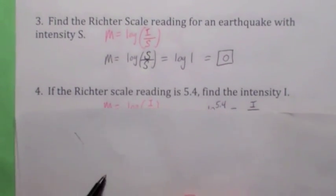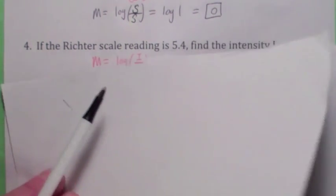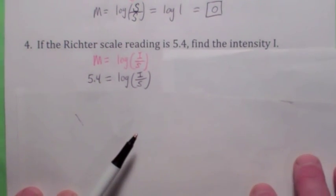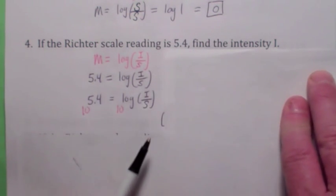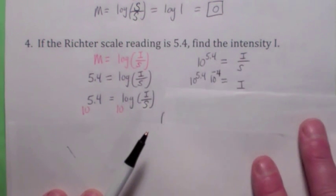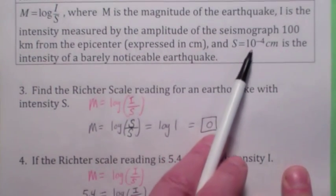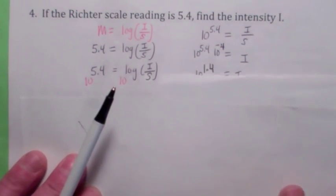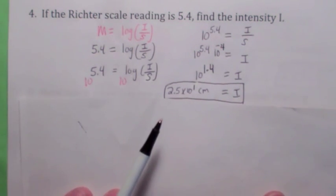Let's do a few more. What if you're given the Richter scale reading and want to find the intensity? If the Richter scale reading is 5.4, we solve for I by raising 10 to each side — you get 10 to the 5.4 equals I over S. Now multiply both sides by S. Remember, S is a constant — that's 10 to the negative 4. So you get 10 to the 1.4. If you enter that on your calculator, you get 2.5 times 10 to the 1 centimeters, or just 25 centimeters.